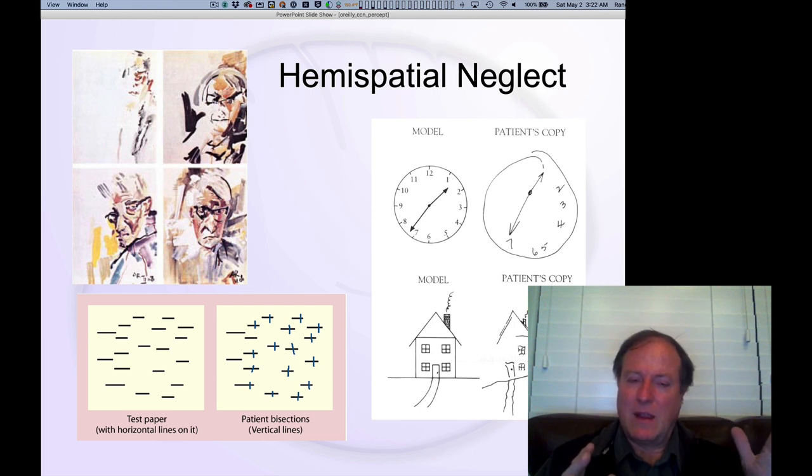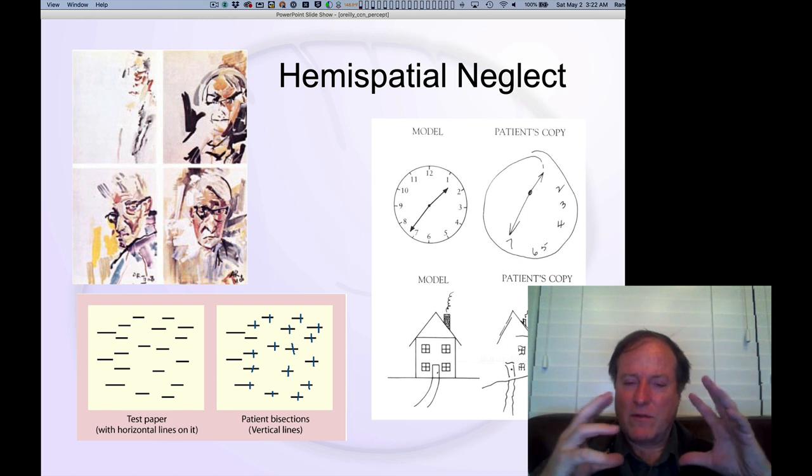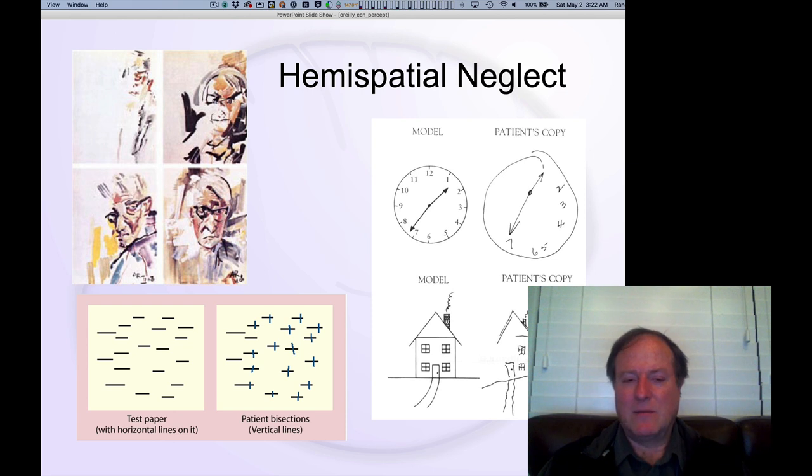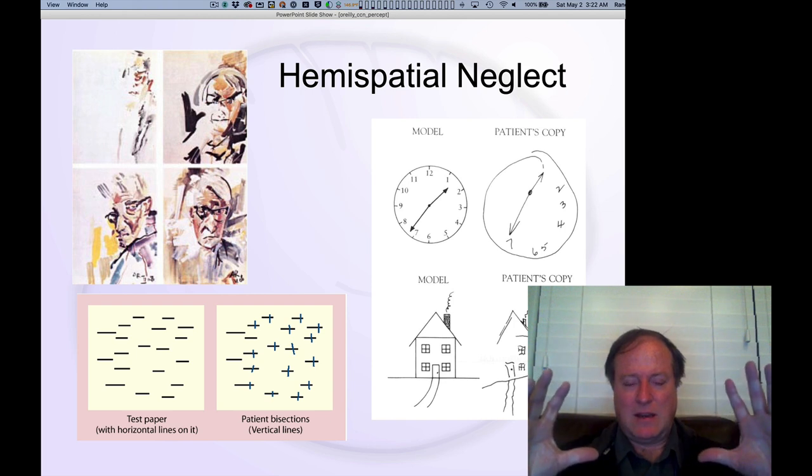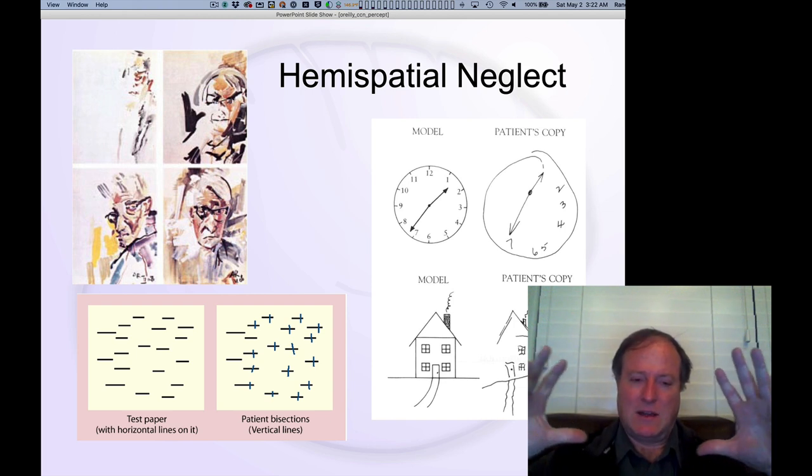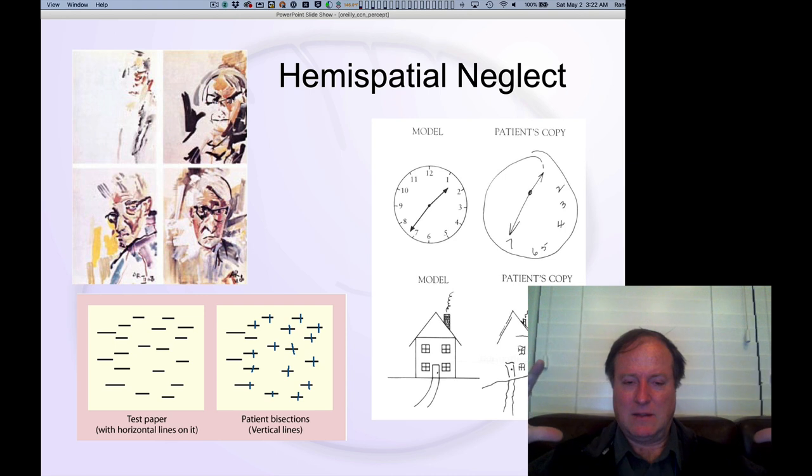But it can also zoom out and look and focus on the overall sheet of paper in which case you're neglecting the left hand side of paper. And so this indicates that we have a kind of zoomable attentional field and that the brain damage is producing an effect at kind of however we zoom that. So this indicates maybe we have a shared common representation of 2D space.